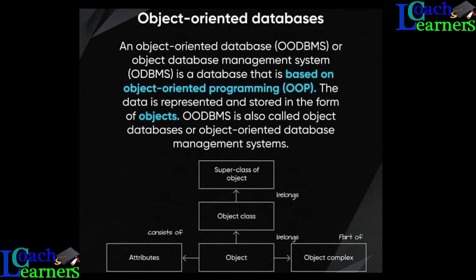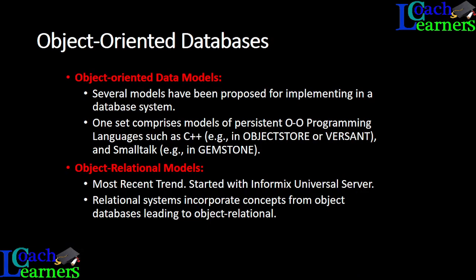There is a diagram here showing various objects arranged in the form of classes. Object-oriented databases come in different flavors: we have object-oriented data models and object-relational models. Several models have been proposed for implementing a database using languages such as C and C++. The object-relational model builds on top of the relational model and incorporates the relational system while bringing in object-oriented features.